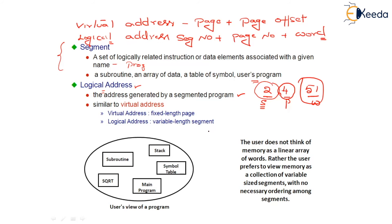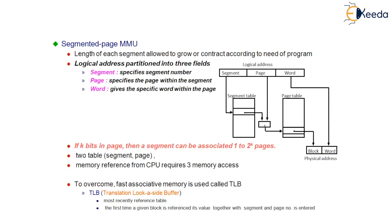The user does not think of memory as a linear array of words. Rather, the user prefers to view memory as a collection of variable-size segments, with each segment referring to a program, with no necessary ordering among the segments. The segmented page MMU — Memory Management Unit — maps a logical address into a physical address. In the logical address there are three fields: the segment field holds the segment number, the page field holds the page number, and the word field holds the word address.